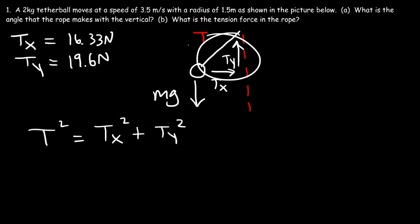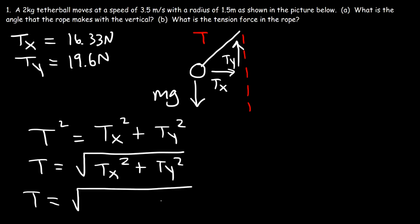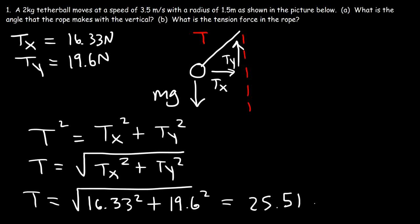Since this is a right triangle, T is just the square root of Tx squared plus Ty squared — the square root of 16.33 squared plus 19.6 squared. So the tension force is 25.51 newtons.